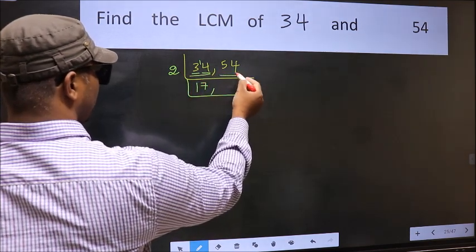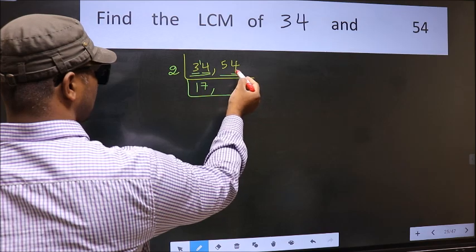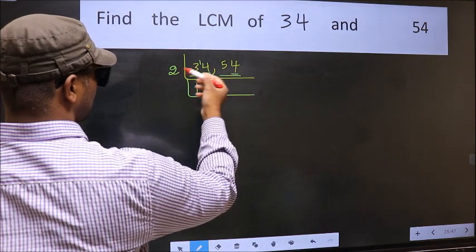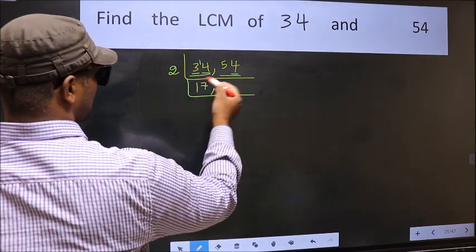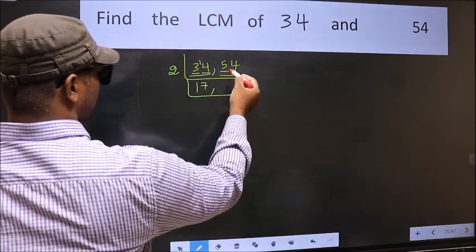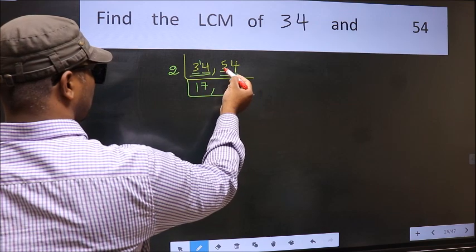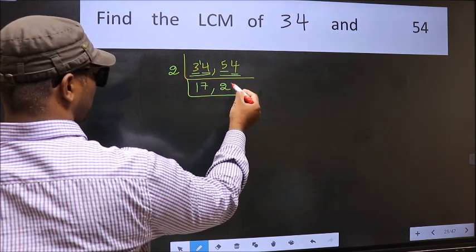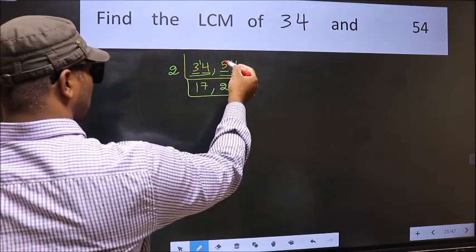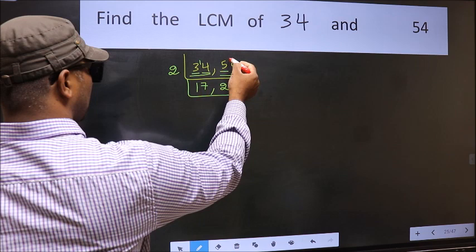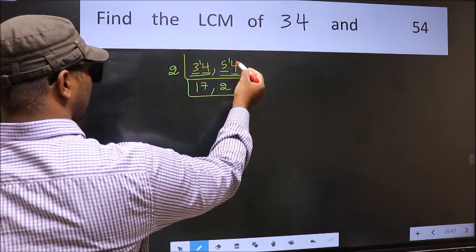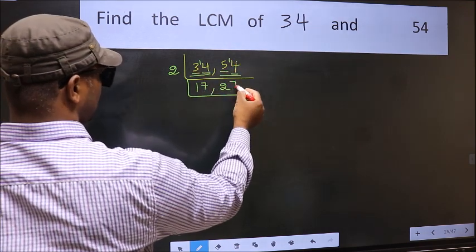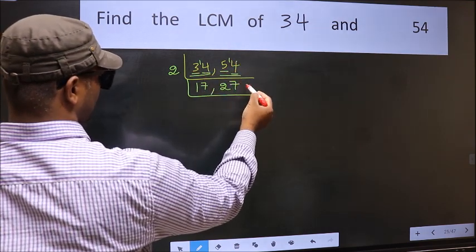The other number, 54 — last digit 4 is even, so this is divisible by 2. First digit is 5; a number close to 5 in the 2 table is 2×2 = 4. 5 minus 4 is 1, carried forward to make 14. When do we get 14 in the 2 table? 2×7 is 14.